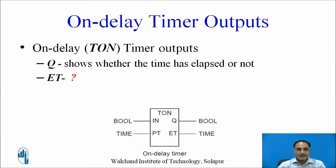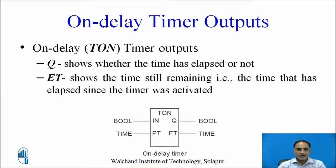Q shows whether the time has elapsed or not. ET stands for elapsed time — it shows the time that has elapsed since the timer was activated. The data type associated with ET is time, so you get the current timer value in seconds at ET, while the data type associated with Q is boolean.